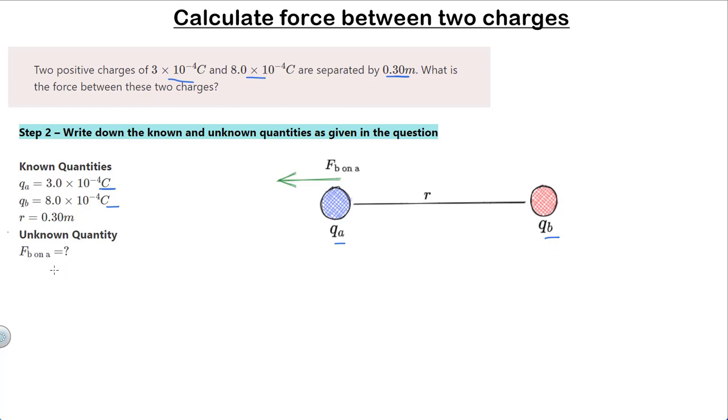Step 3 is to solve for the unknown quantities. Here we have to find the force between the two charges in this problem. The force on charge QA due to charge QB can be calculated using Coulomb's law. For these two charges QA and QB, Coulomb's law is F equals K QA QB upon R square.